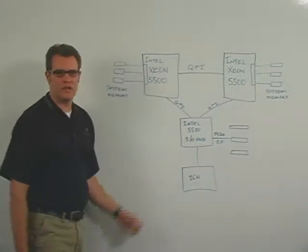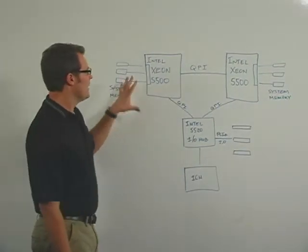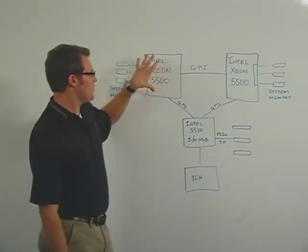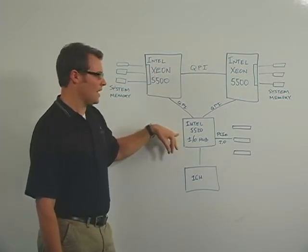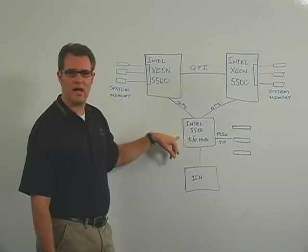Okay, so over here we've got a block diagram of a server that utilizes these new processors. So what we've got is two Intel's Xeon 5500 processors. They're connected to Intel 5520 IOHUB.